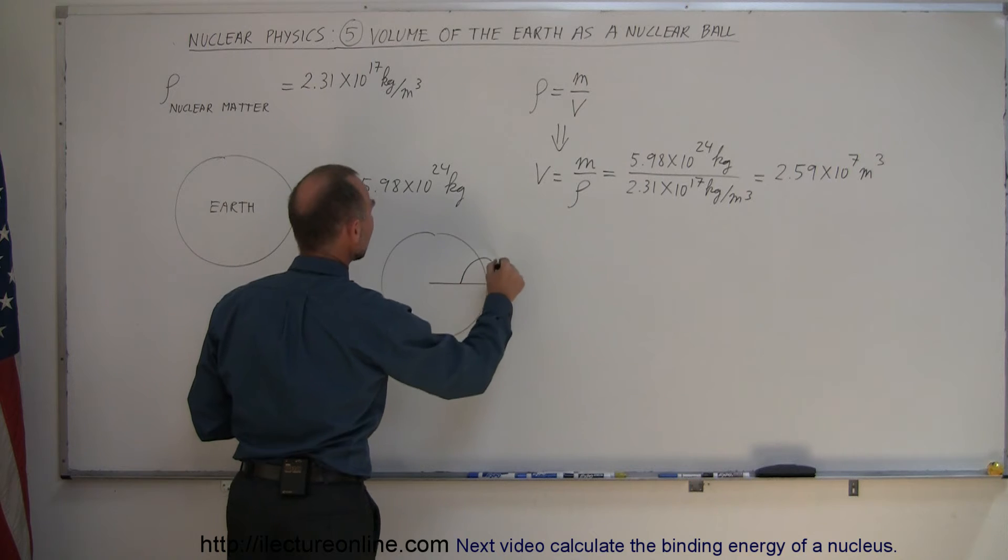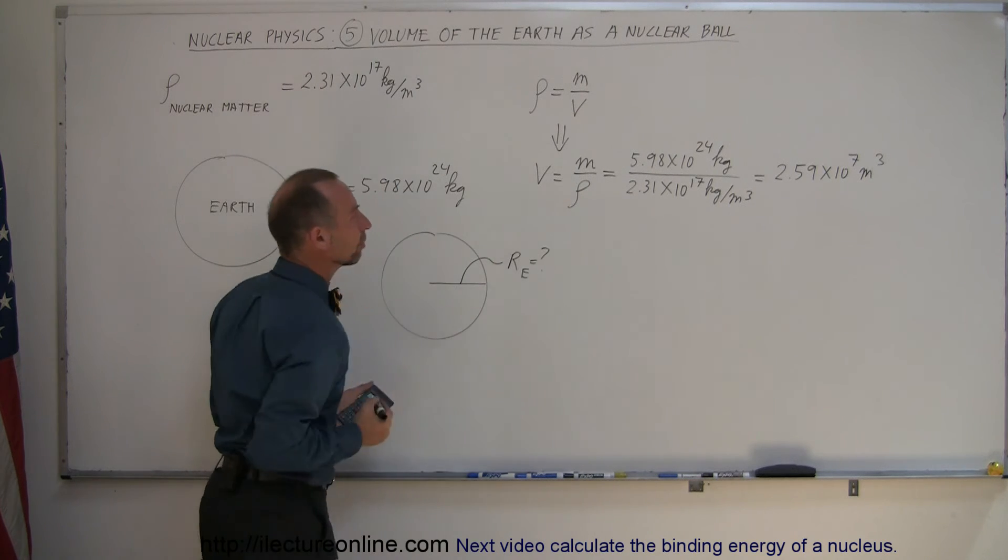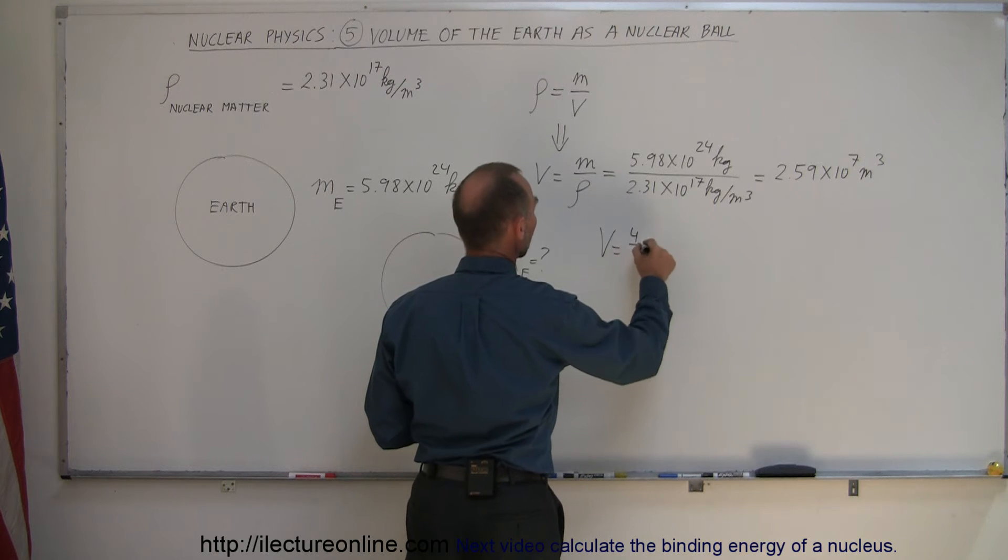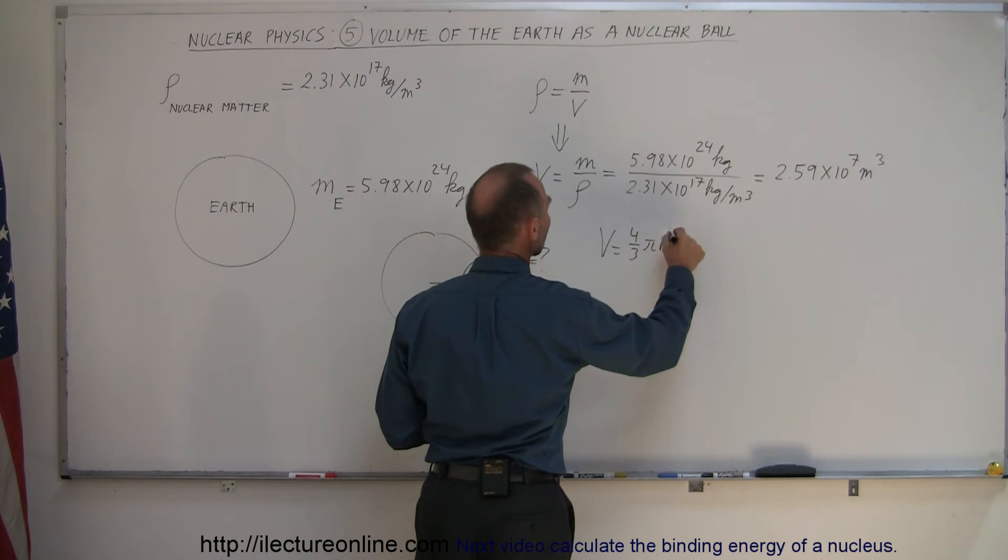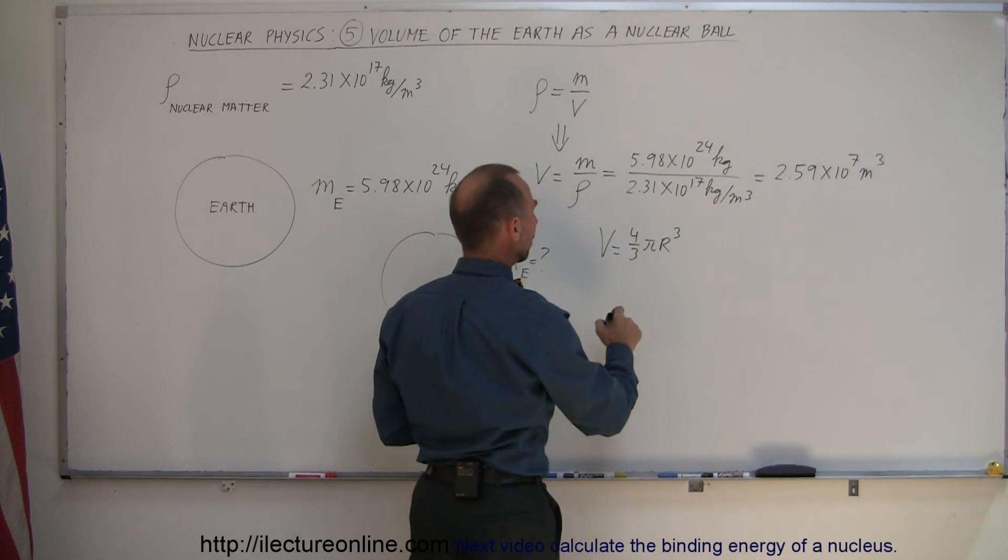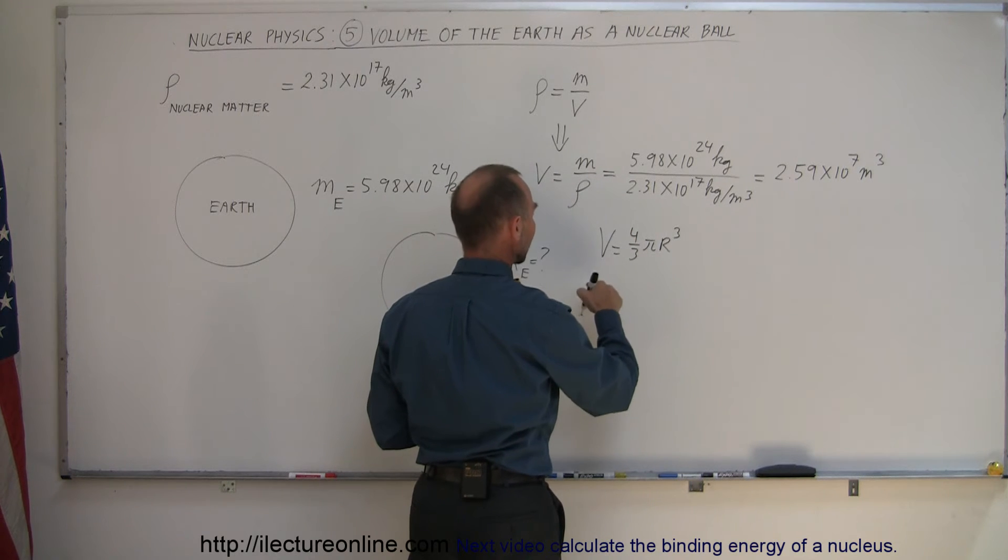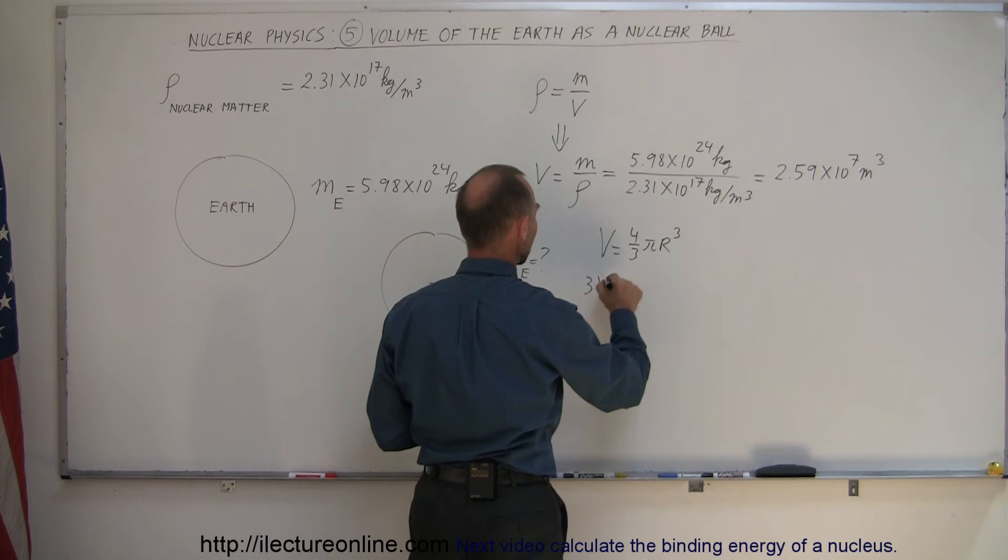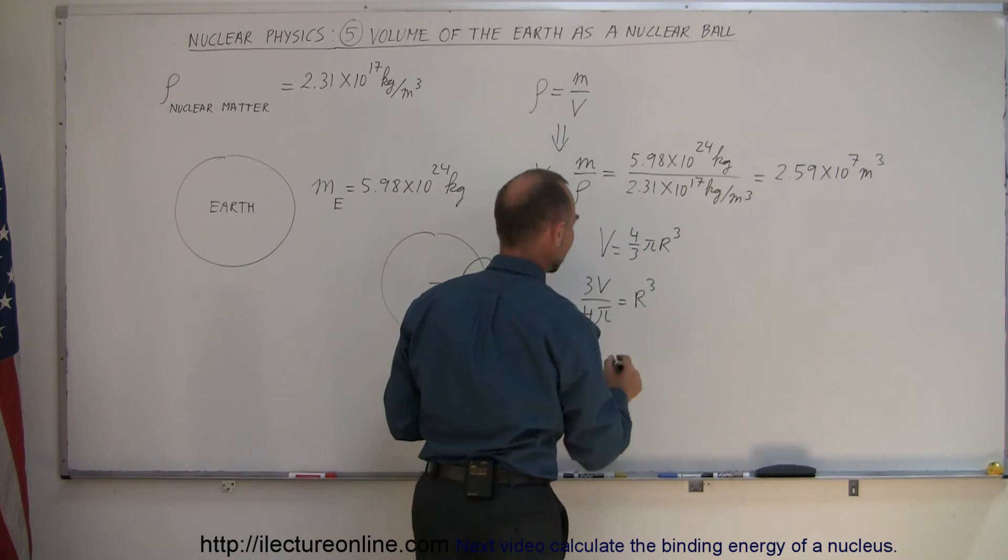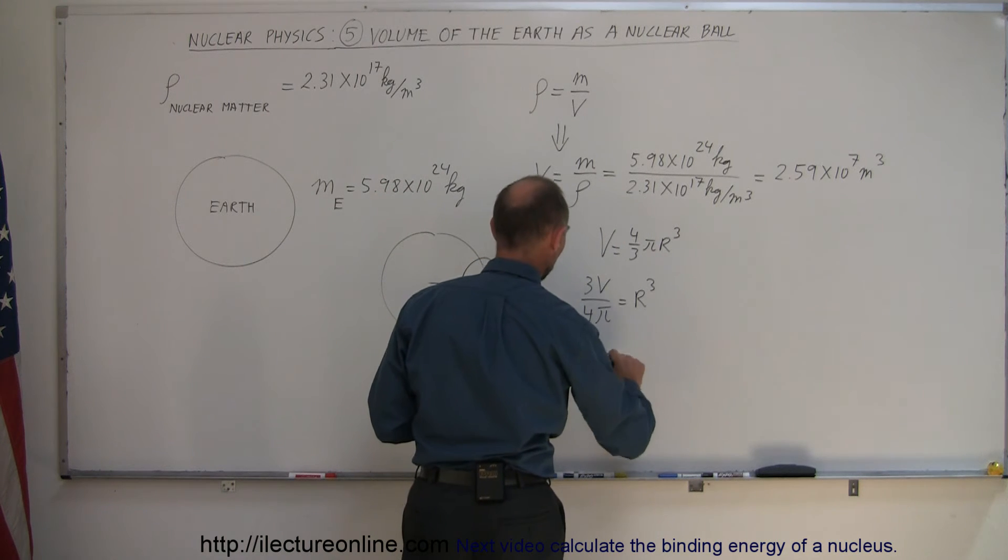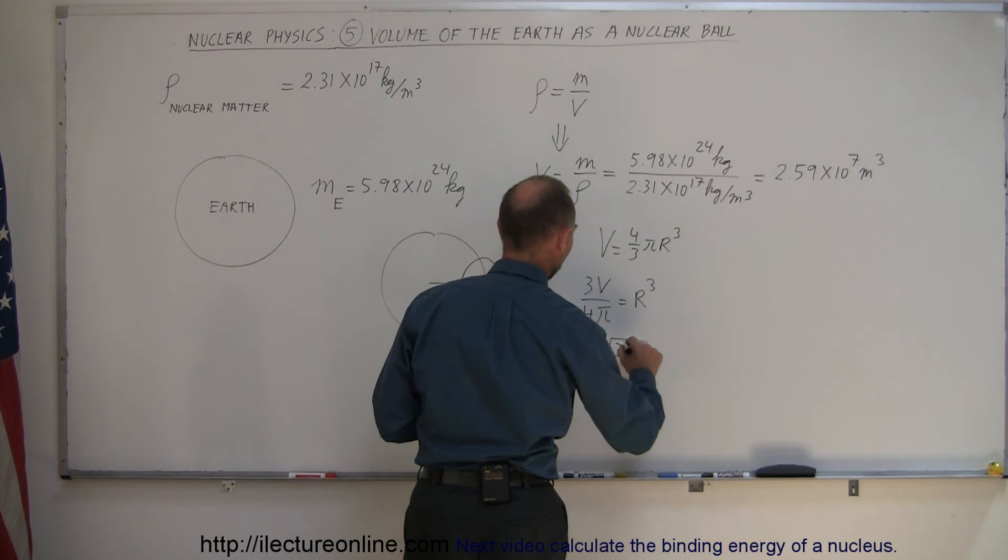What would be the radius of the Earth if it was a nuclear ball like that? And of course, we know that the volume is equal to 4 thirds pi r cubed. So if we solve this for r, we multiply both sides by 3, divide both sides by 4, divide both sides by pi. So we get 3v over 4 pi is equal to r cubed. And then if we take the cube root of both sides, we can say that r is equal to the cube root of 3 times the volume divided by 4 times pi.